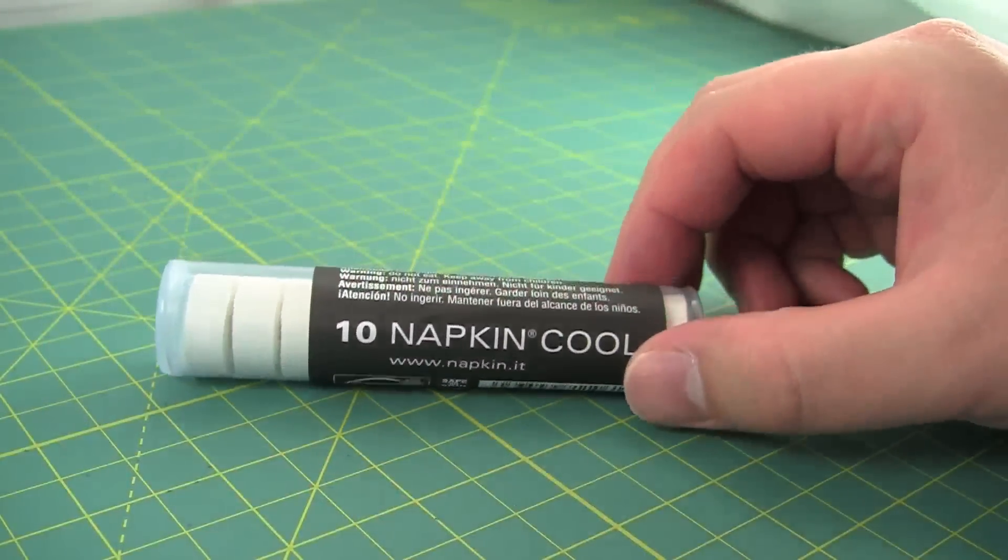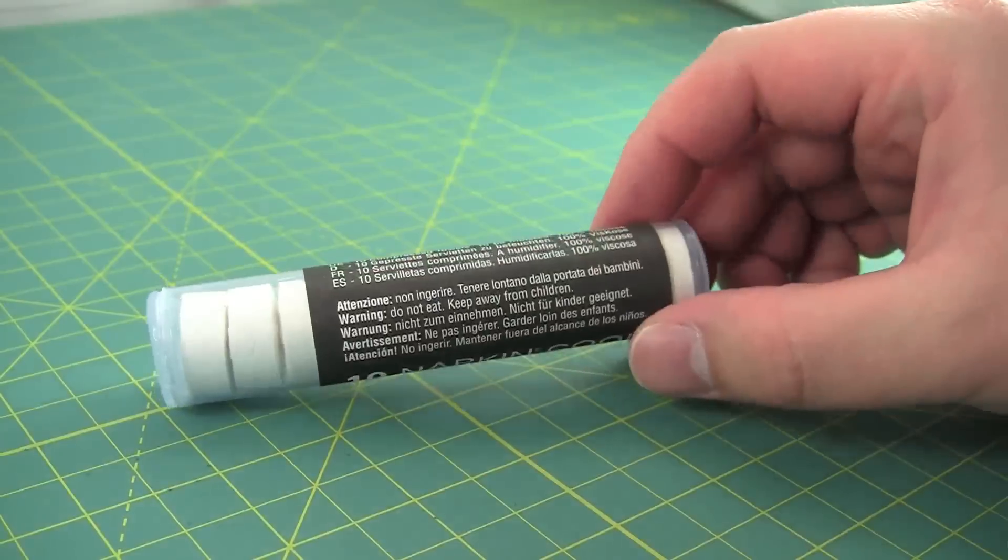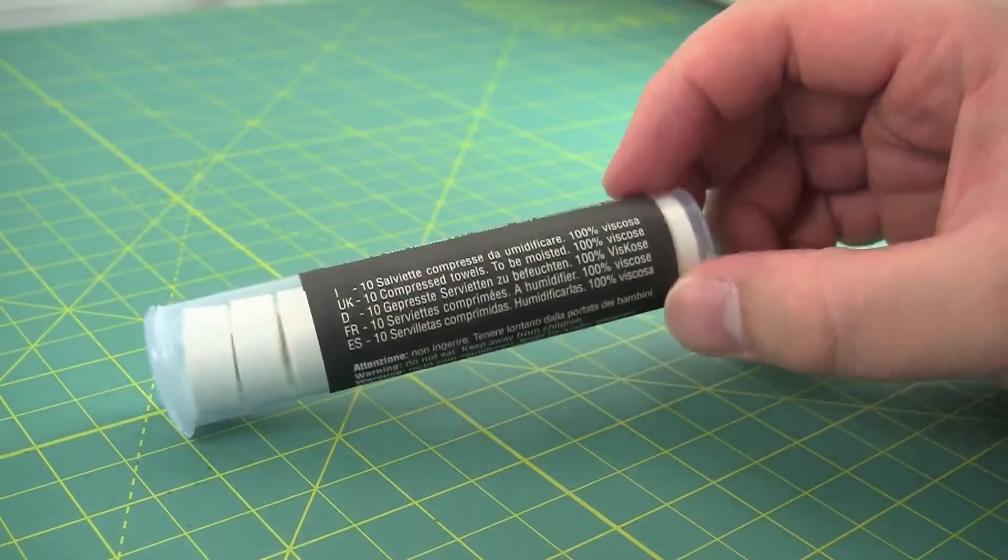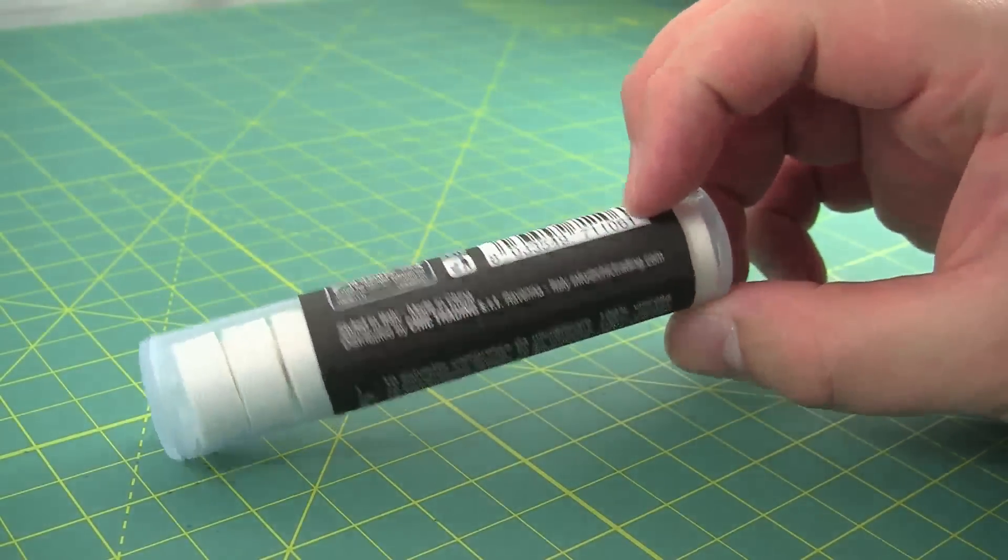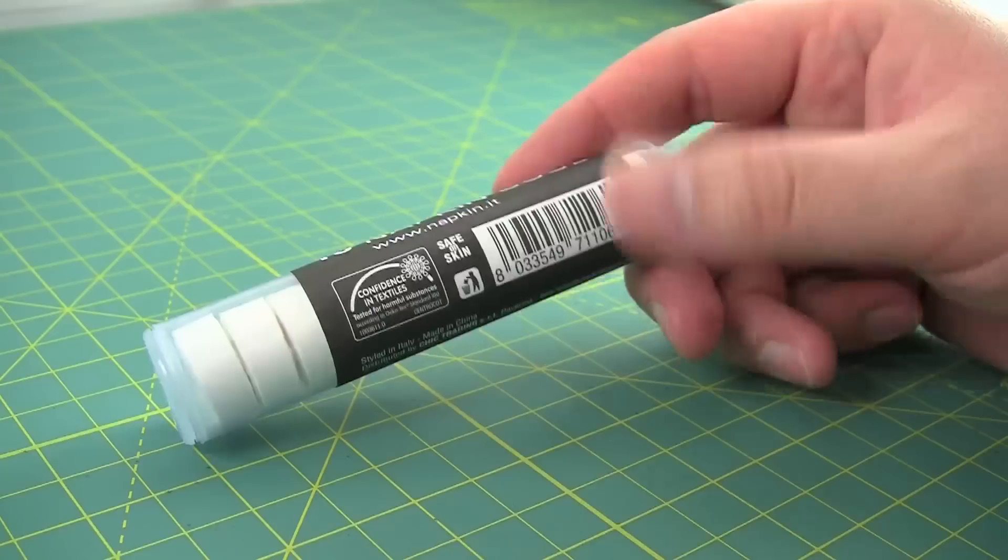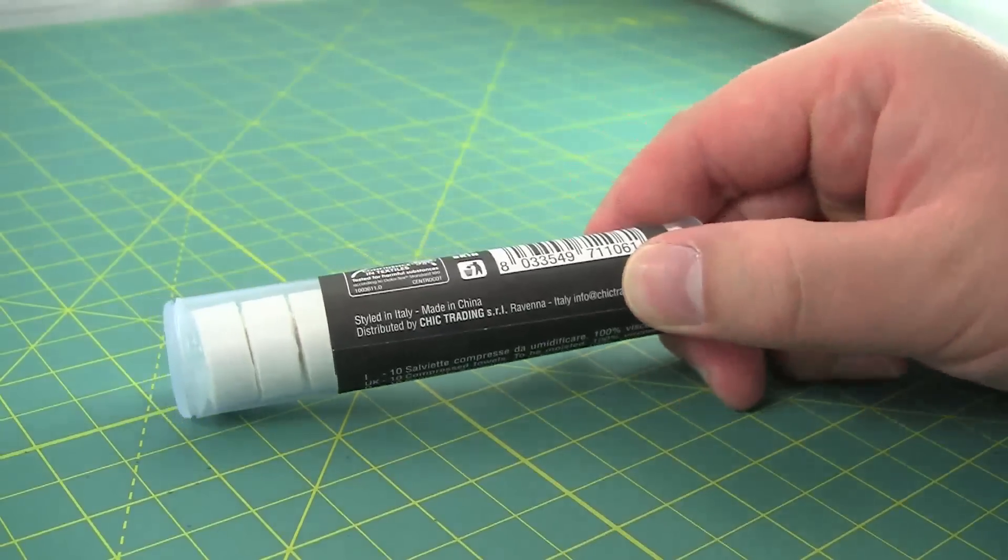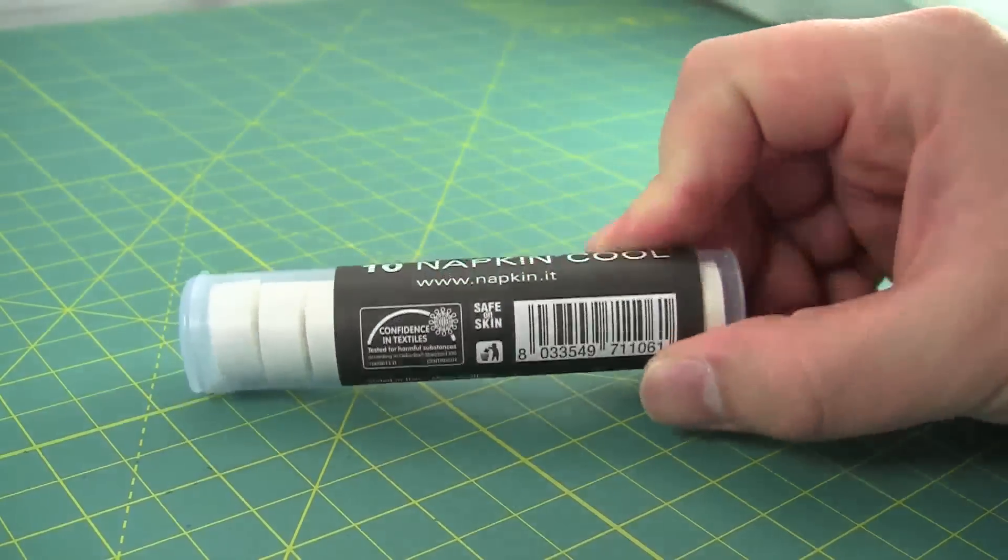All right, so the other day I was at the hardware store and I came across a display of instant napkins. It's got this little tube and it says styled in Italy, made in China.